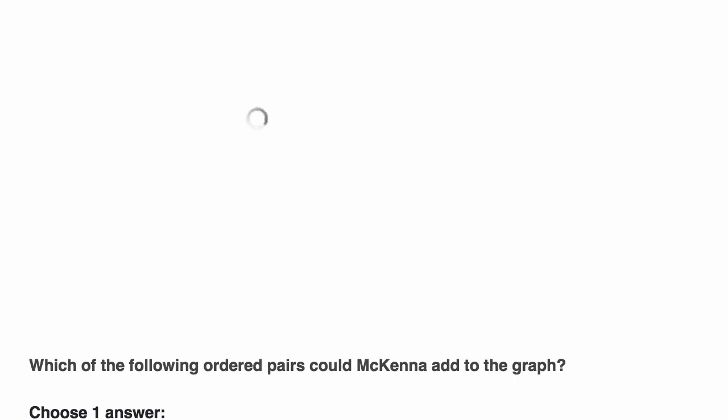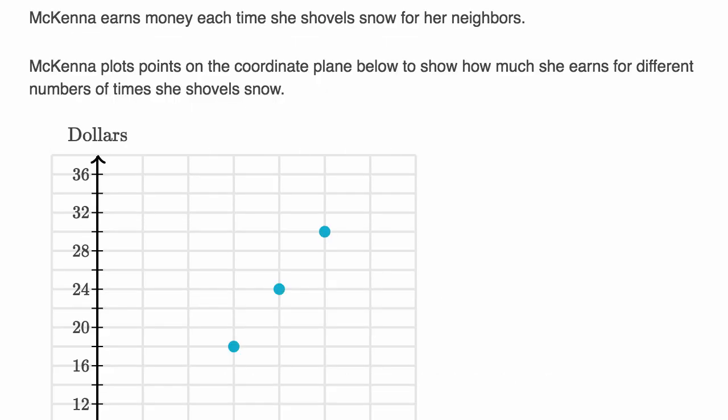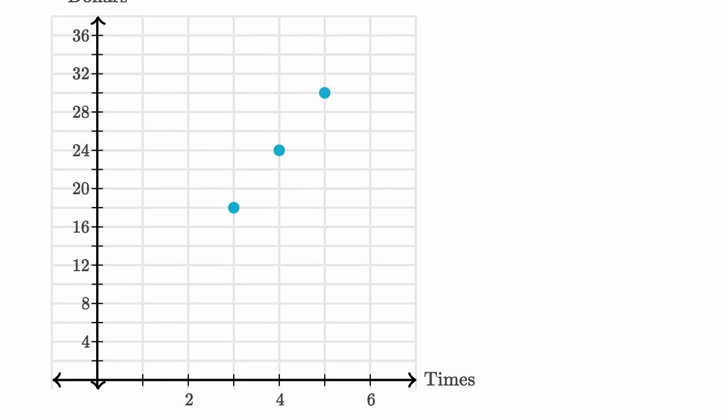Let's do one more example. Here we're told McKenna earns money each time she shovels snow for her neighbors, as she should. McKenna plots points on the coordinate plane below to show how much she earns for different numbers of times she shovels snow. All right, so when she shovels snow 3 times, looks like she gets halfway between 16 and 20, looks like she gets $18.